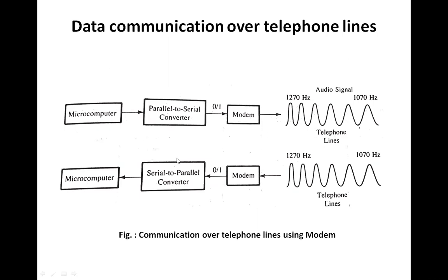A typical process for a 300 bits-per-second modem is represented in the figure. The parallel word from the microcomputer is first converted into serial bits. The originator modem then generates two audio frequencies: 1070 Hz for logic zero (space) and 1270 Hz for logic one (mark).